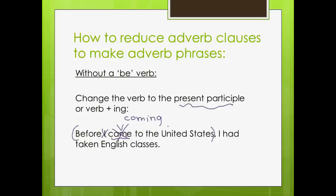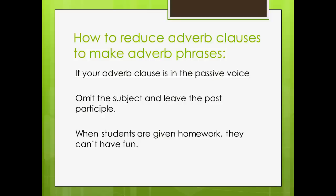And I mentioned passive voice. What happens if I have an adverb clause that has passive voice? Well, it follows another rule. The first step is still the same — I need to check my subjects in both clauses. Here, my subject is 'students.' Here it is 'they.' 'They' is referring to 'students,' so they are the same. Get rid of it. My next step is: do I have a be verb? We have the passive voice — 'are given.' I do have that be verb, so I need to get rid of it as well. But instead of changing the past participle 'given' into the present participle like before, it's actually okay to leave it the way it is. So our sentence becomes: 'When given homework, they can't have fun.'